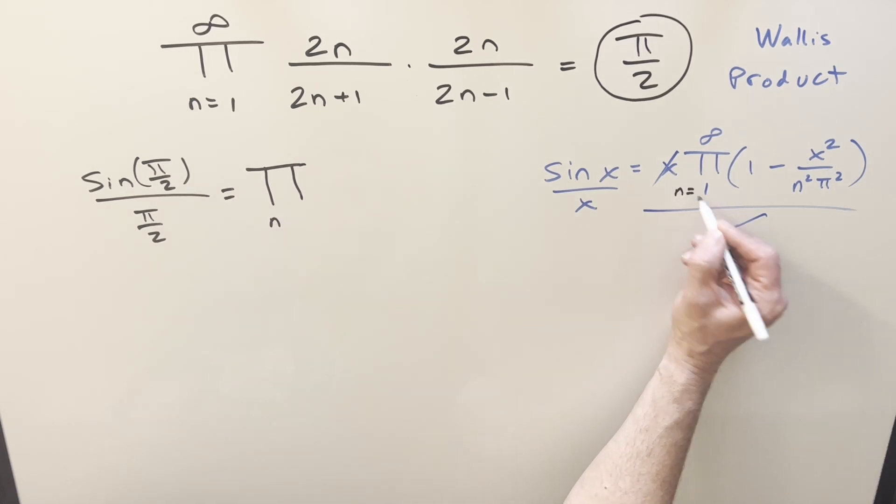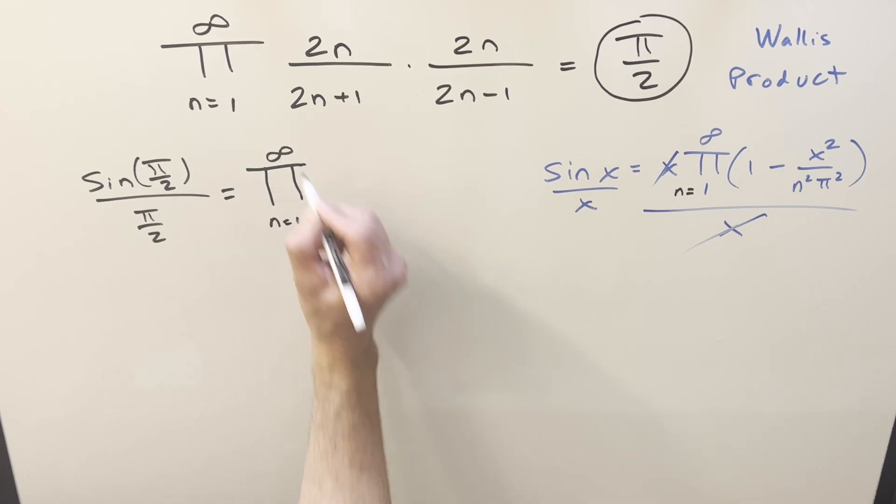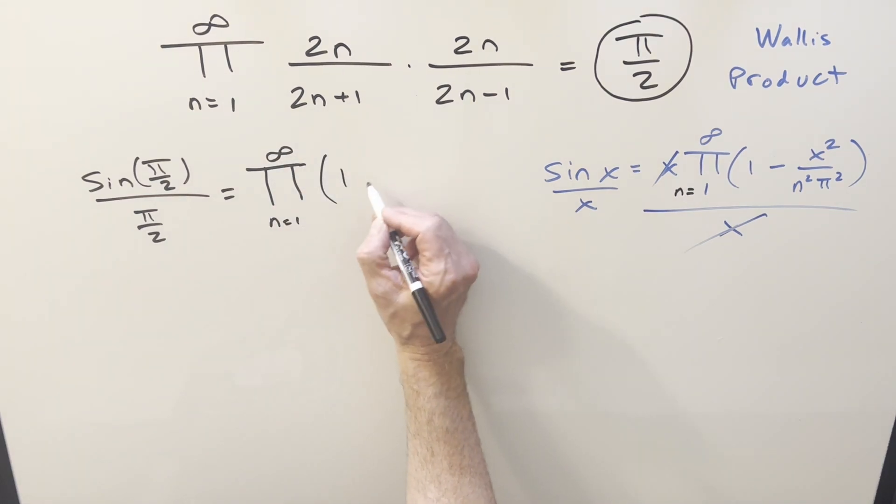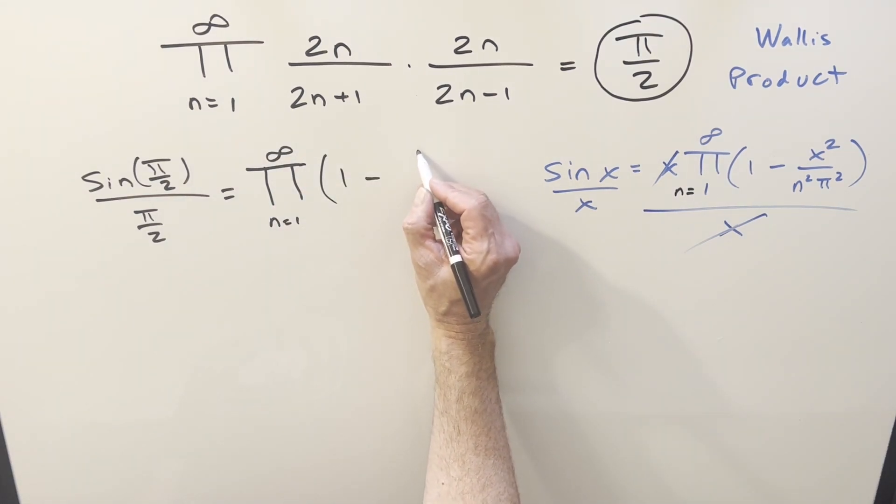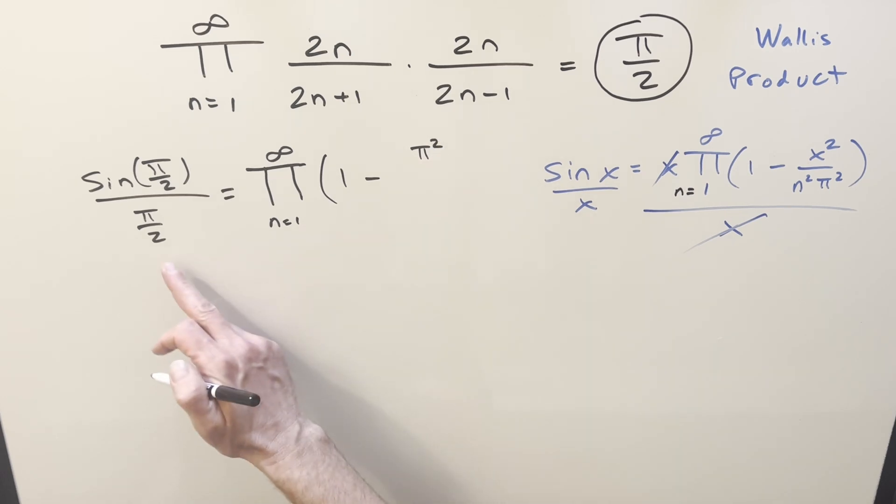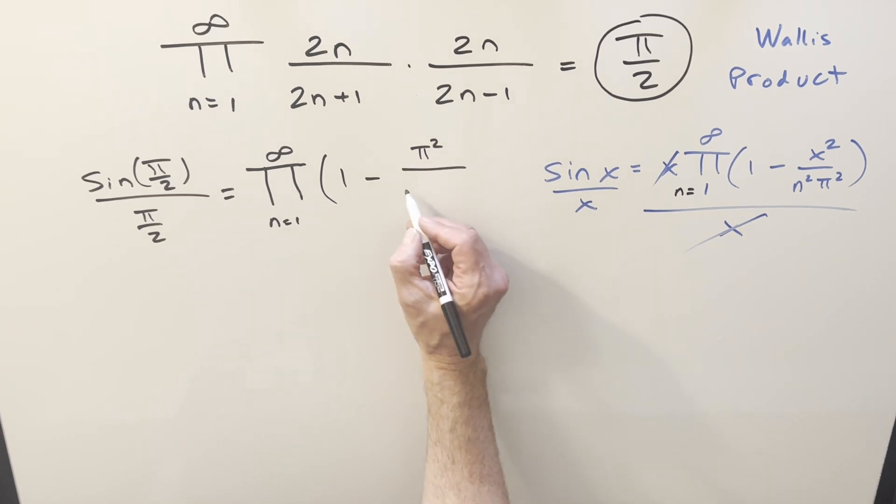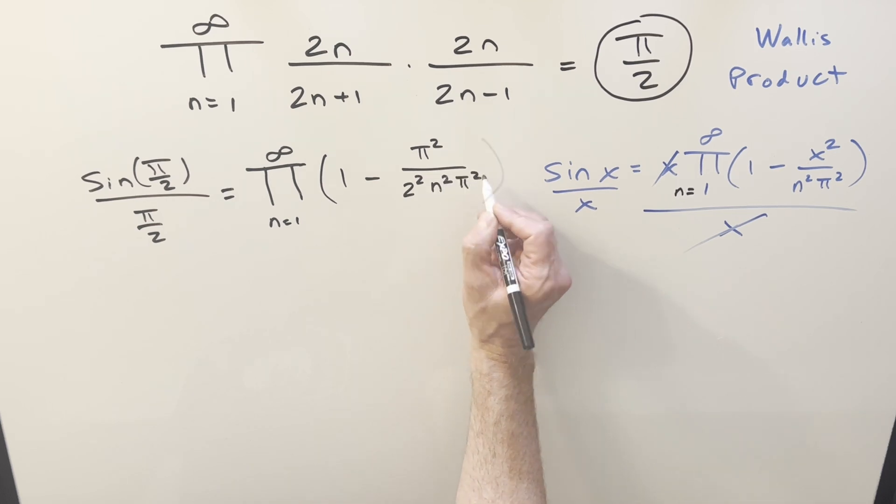I should have on here an n. So this is n equals 1 to infinity. And then plugging in pi over 2, this is going to become pi squared. Let's take the 2 and we square it into the denominator here. I can write it as 2 squared n squared pi squared.